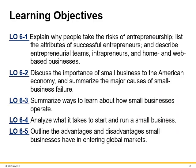There are five learning objectives in Chapter 6. The first is to explain why people take the risk of entrepreneurship, listing the attributes of successful entrepreneurs, and describe entrepreneurial teams, entrepreneurs, and home and web-based businesses. The second is to discuss the importance of small business to the American economy and summarize the major causes of small business failures. Three, summarize ways to learn about small business operations. Four, analyze what it takes to start and run a small business. And finally, number five, outline the advantages and disadvantages small businesses have in entering global markets.